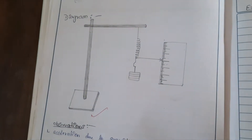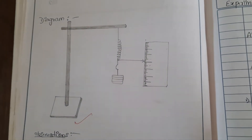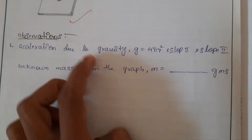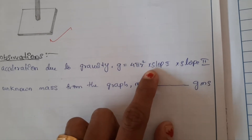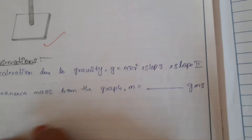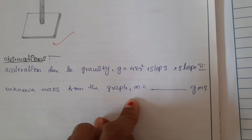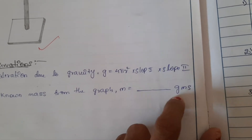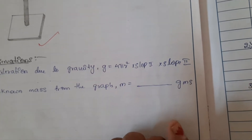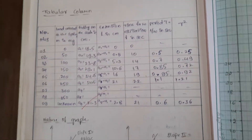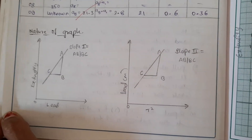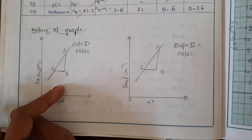This is the experimental diagram. Observations should be noted here. Acceleration due to gravity g is calculated as 4π² multiplied by slope 1 into slope 2. The unknown mass is obtained from the graph. The procedure and how to note down the readings will be explained, and two graphs need to be plotted for this experiment.